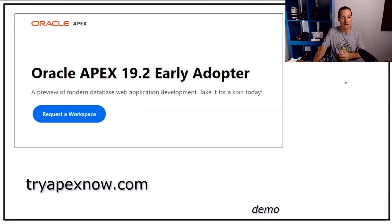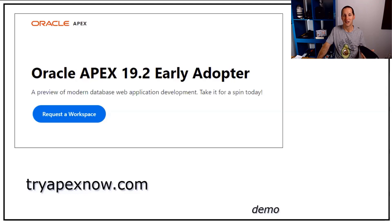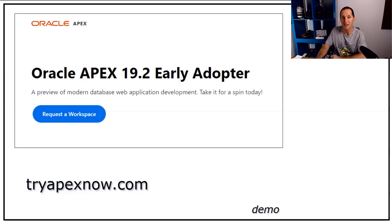If you want to have a tinker with Application Express as a DBA just to see what's coming, APEX 19.2 will be coming out soon. You can go to tryapexnow.com to actually try it, and I thought I'd give you a quick demo to hopefully pique your interest as a DBA in the kinds of things you might be able to get out of Application Express.